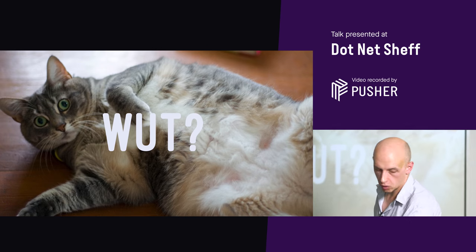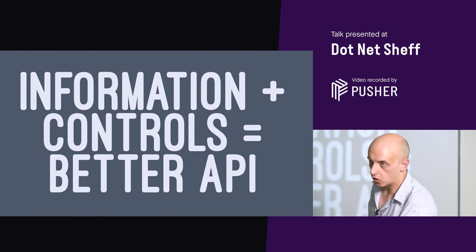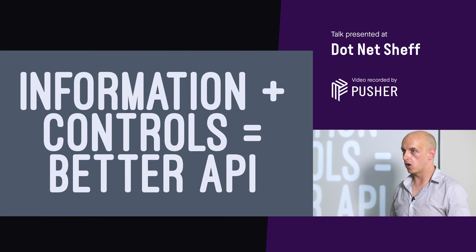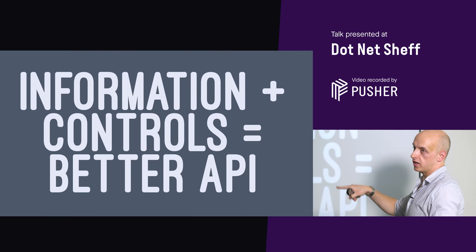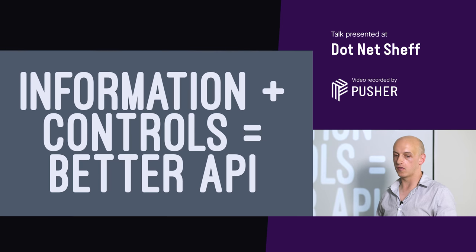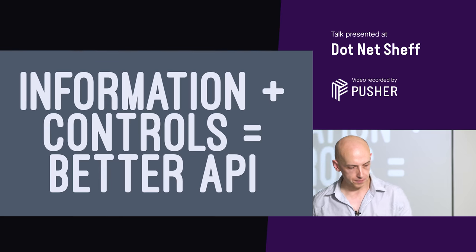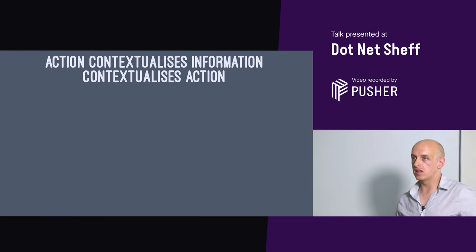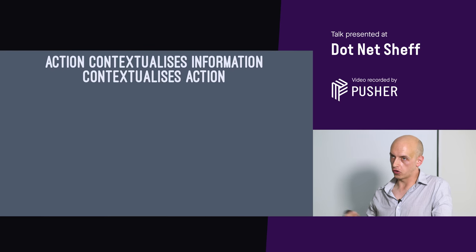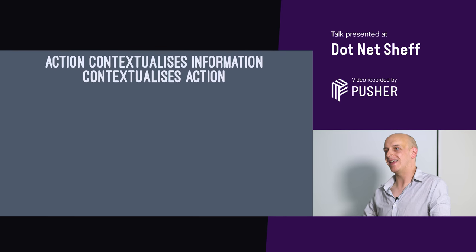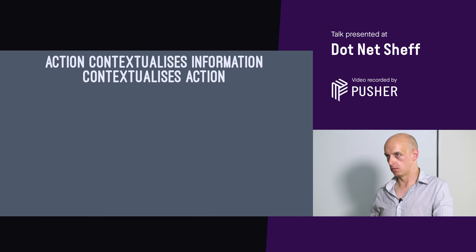Let me simplify that: information and controls together will give you better APIs. If you're going to remember anything from tonight, remember this: information and controls together. You do not separate them out — you keep them in the same place. The reason is that action contextualizes information, which contextualizes action. There's a two-way street between the state of things and the actions you can take on them. Keep that loop going and you'll have a much better API.